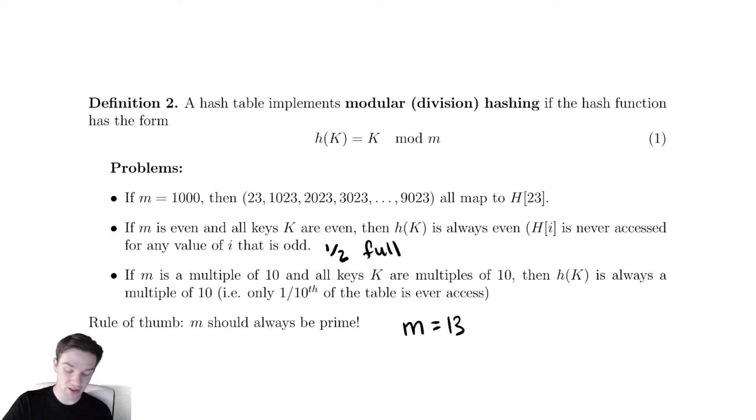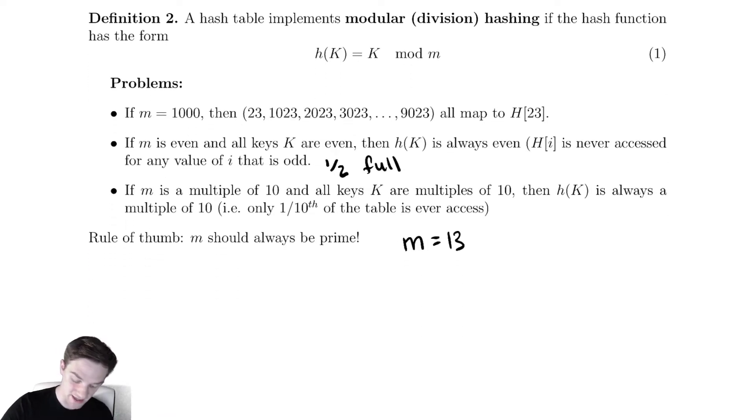all of these values would map to h of 23, which is really not ideal to have. We have this regular pattern incrementing by a fixed value, m each time, and all of those map to the same thing. That seems like a serious problem.